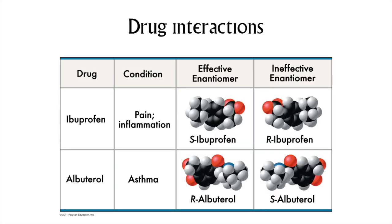Enantiomers are an important consideration in the synthesis of pharmaceuticals. If a drug has one or more asymmetric carbons, one form of the drug may be effective, and the opposite-handed form may be ineffective or worse, cause unwanted side effects. In this slide, we see two different drugs with asymmetric carbon atoms: ibuprofen and albuterol.